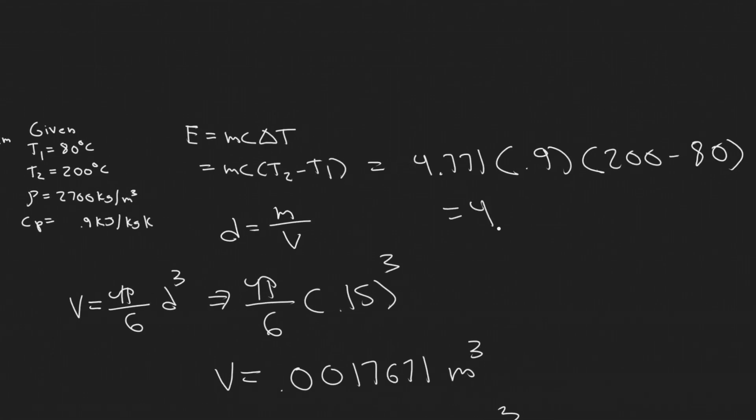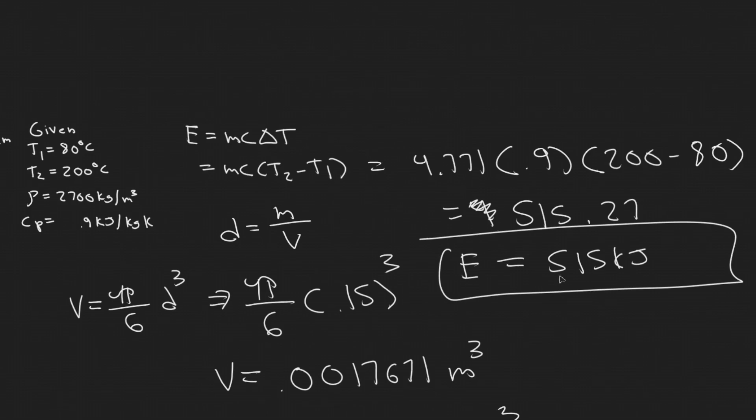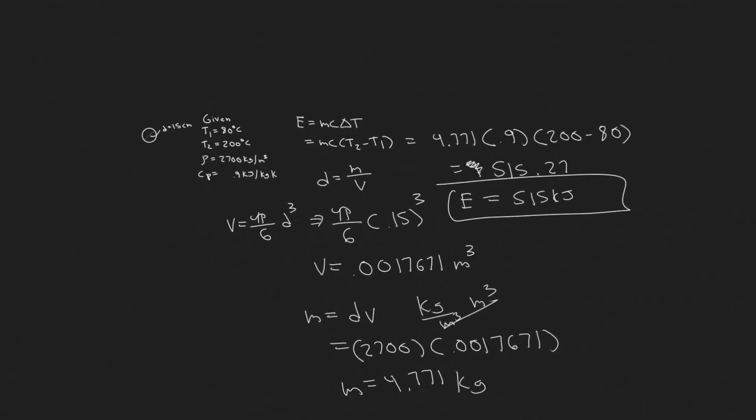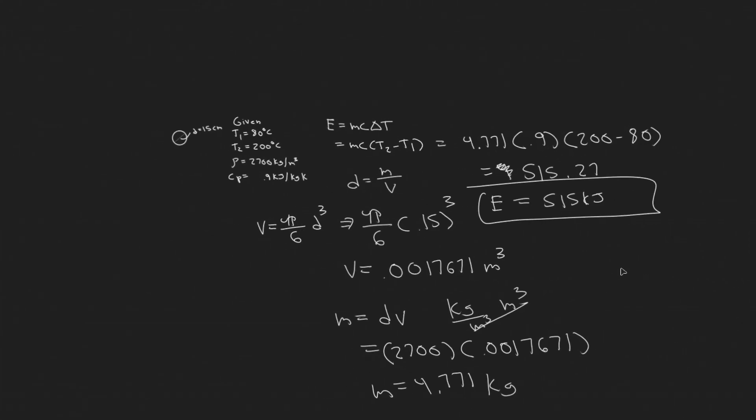So plugging this in, 4.771 times 0.9 times 120. So it's going to be equal to 515.27. So about 515, keep in mind our units are going to be kilojoules since we had kilojoules here. So E equals 515 kilojoules. So that's going to be your answer. And hopefully you found this video useful.